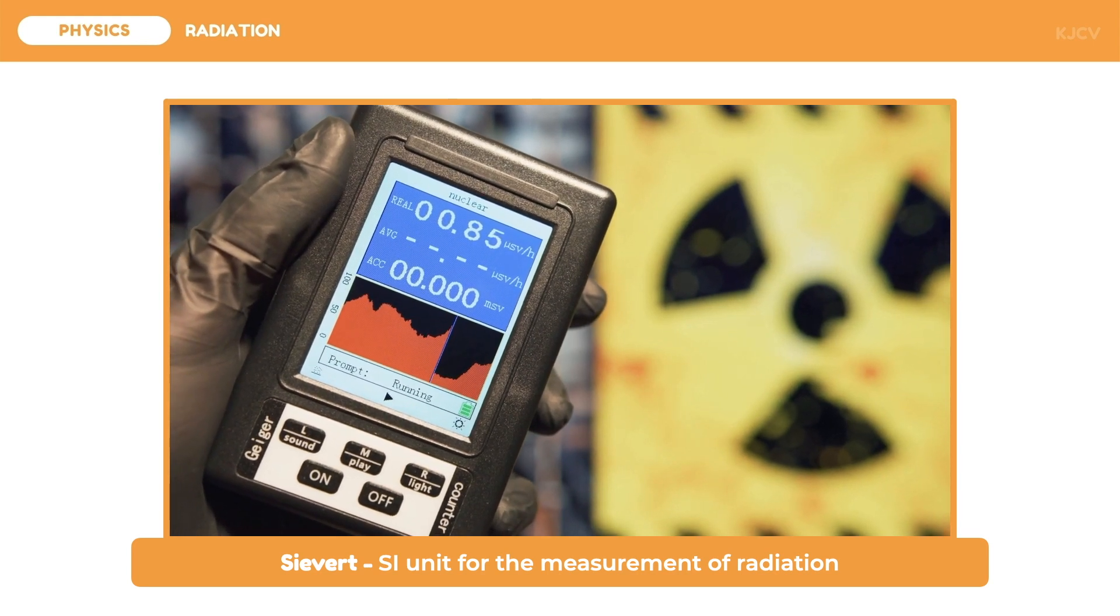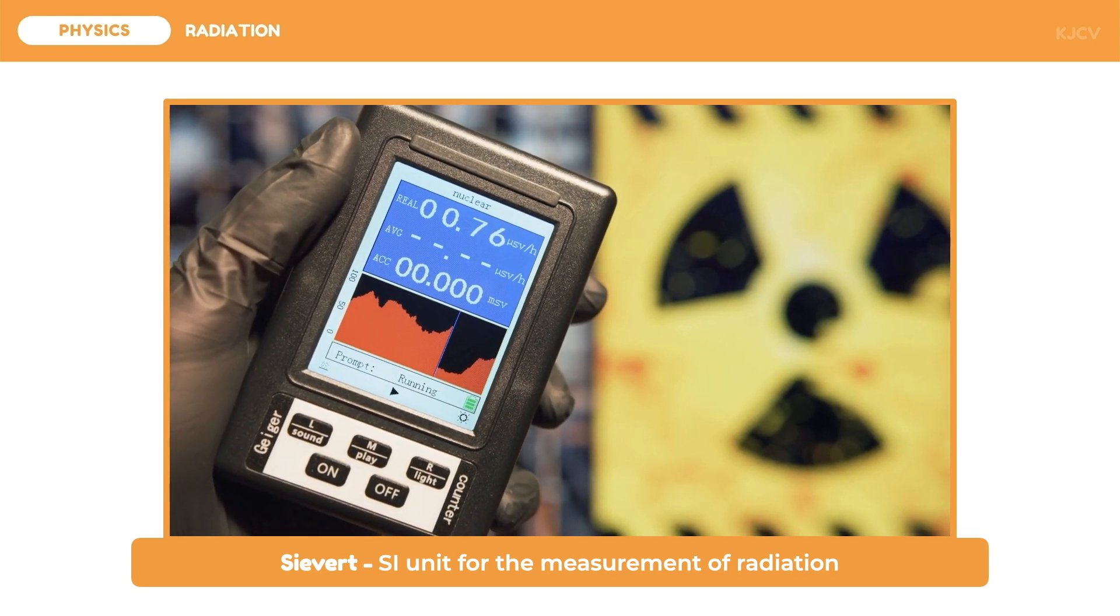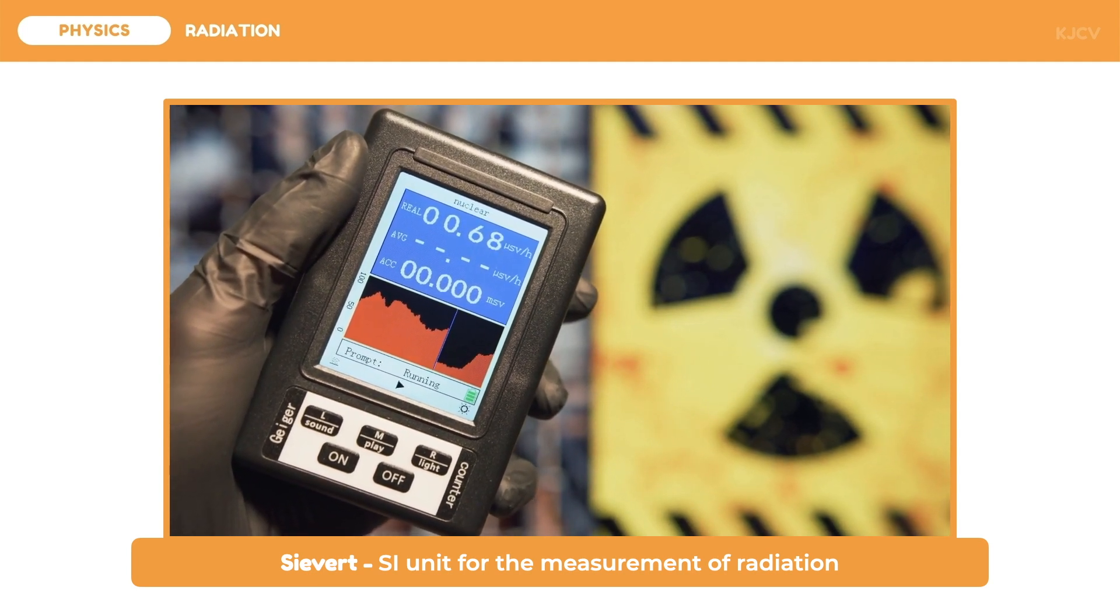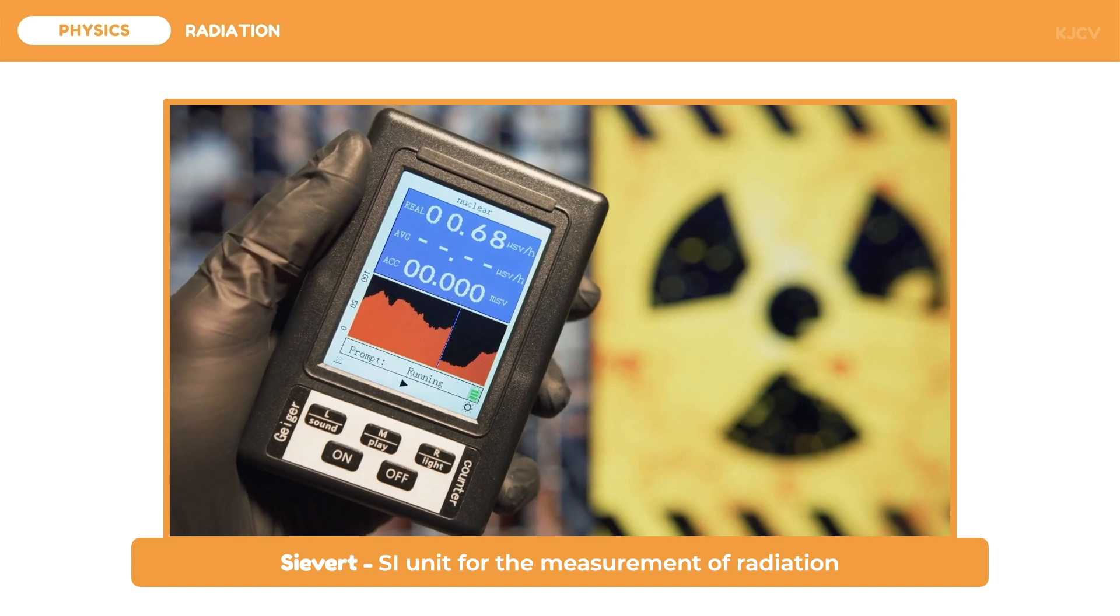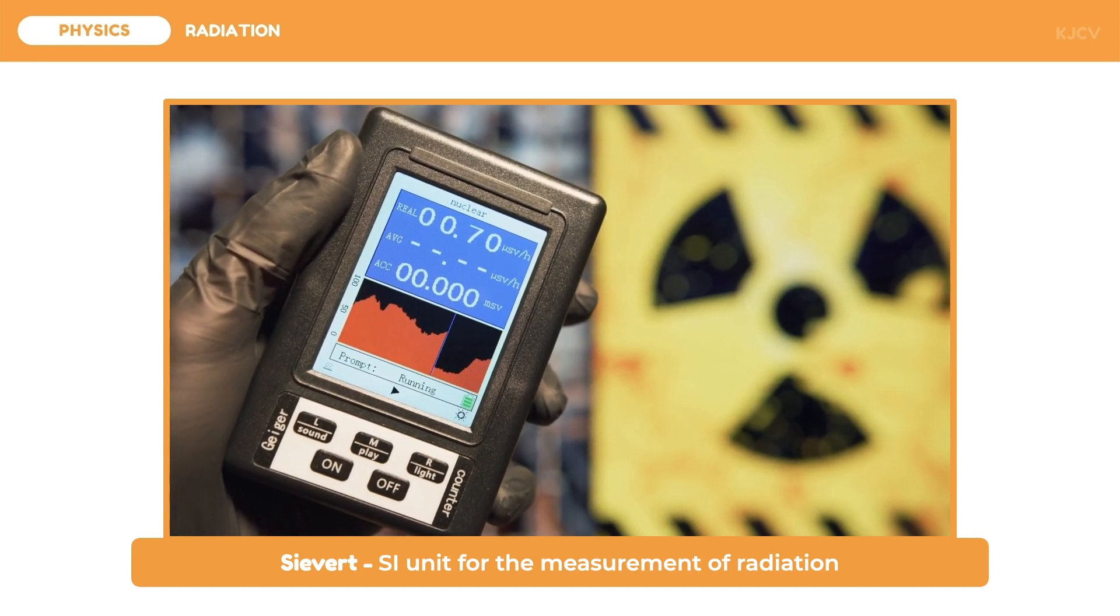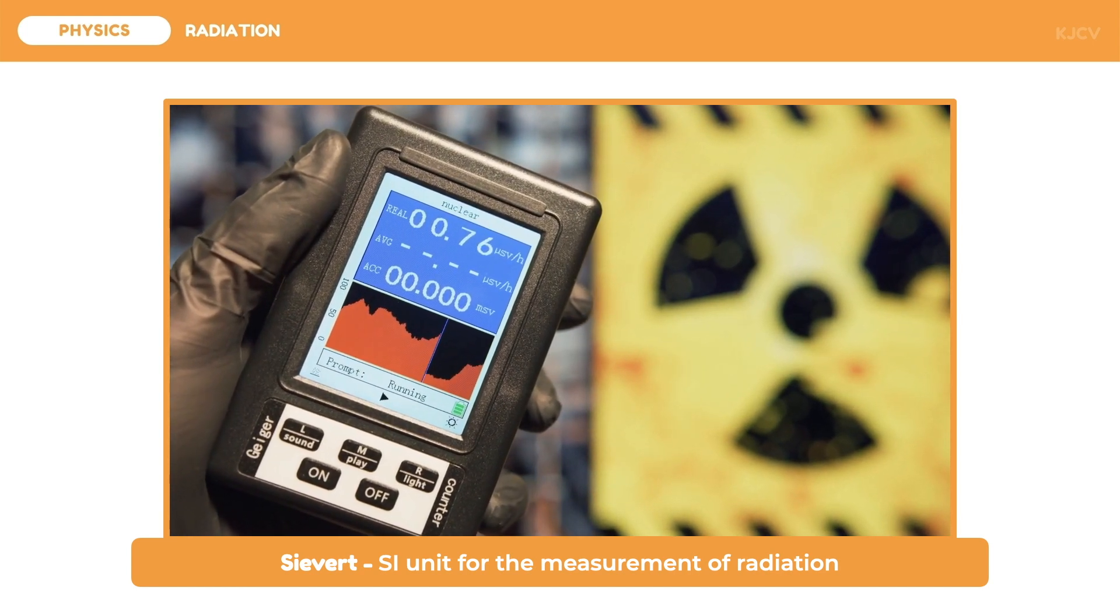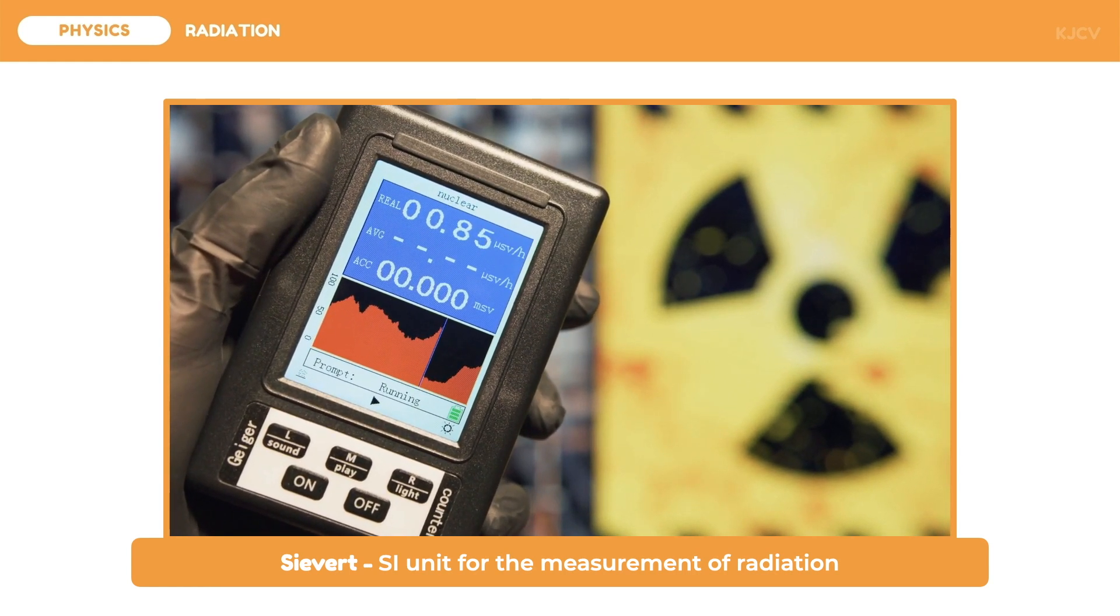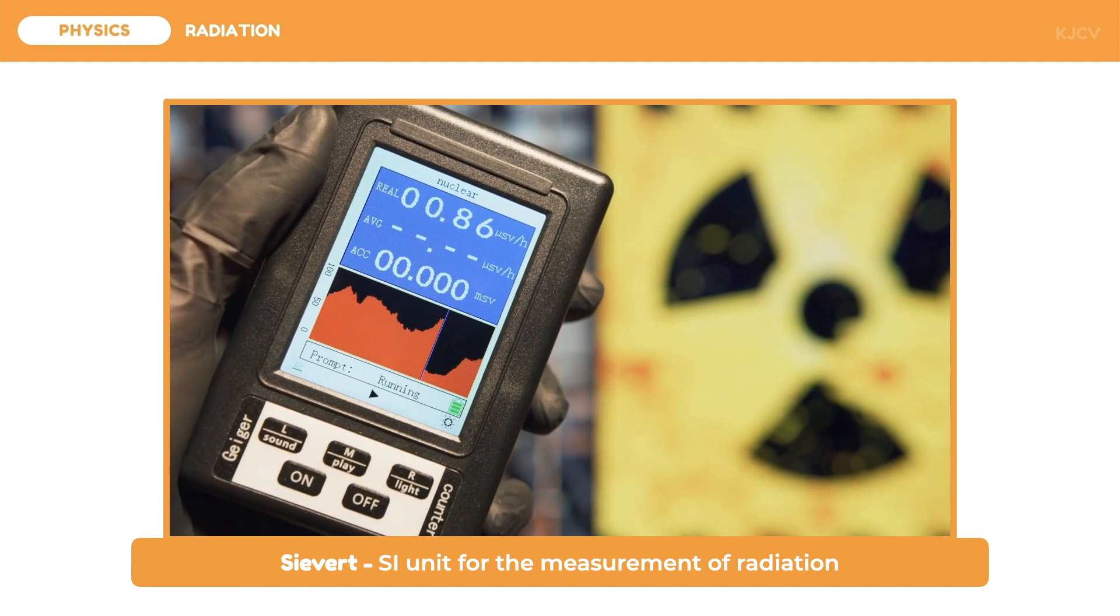Sievert is the standard metric unit for the measurement of radiation. One sievert is already very dangerous that it may cause symptoms of radiation sickness. One millisievert is the annual public dose limit, but only 0.6 millisieverts is the average radiation which we get. Half of this annual radiation comes from natural radiation like radon in the air, trace amounts of cosmic rays, and even the earth itself.